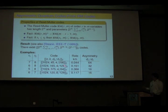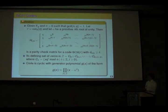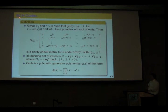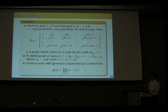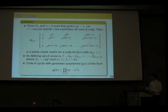Reed-Muller codes have a disadvantage: you don't have much freedom in choosing your distance. Classically, a very famous family with more freedom is the class of BCH codes. They are very useful because you can control the minimum distance by a very simple process. Let's see how they can also be used to define asymmetric quantum codes. They have a similar nested property to Reed-Muller codes.